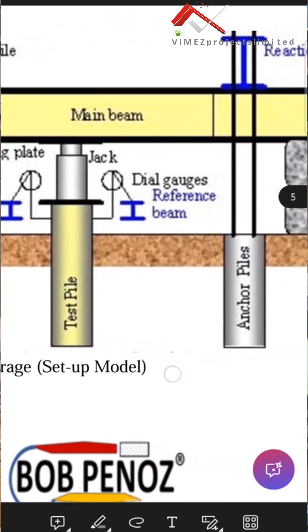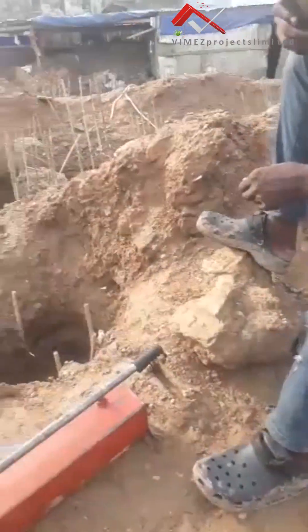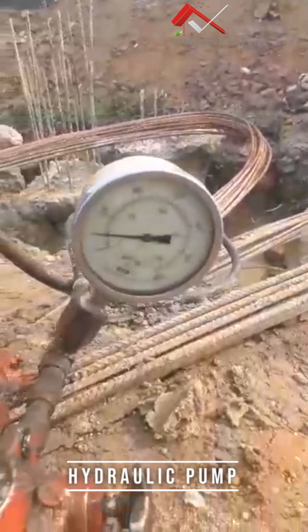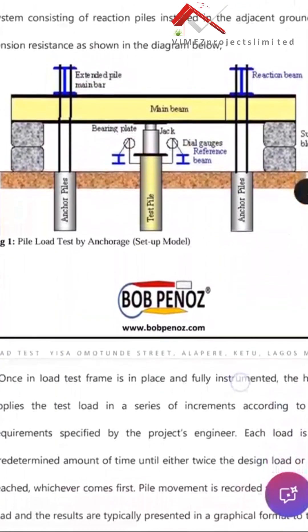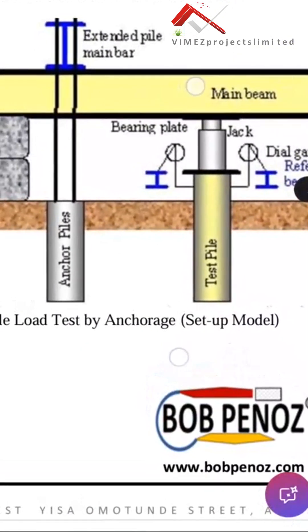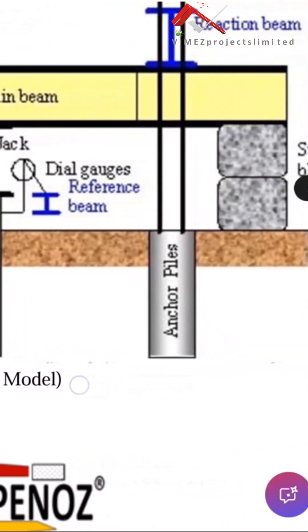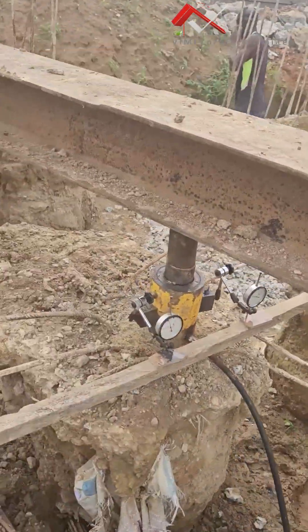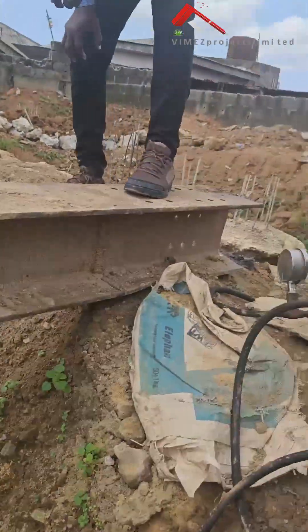There are some equipment used in taking this load test. We have the reaction beams — primary and secondary reaction beams — standard steel for anchorage, a hydraulic pump with about 1,000-bar capacity, and a hydraulic jack. We have the test pile and two anchor piles. These two anchor piles work together as we perform this test. We use the hydraulic pump to apply pressure, loading the building gradually.